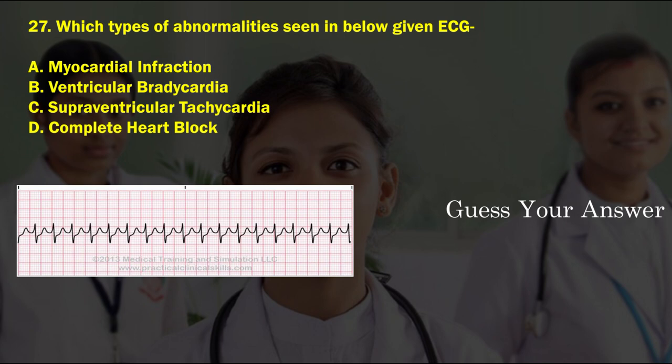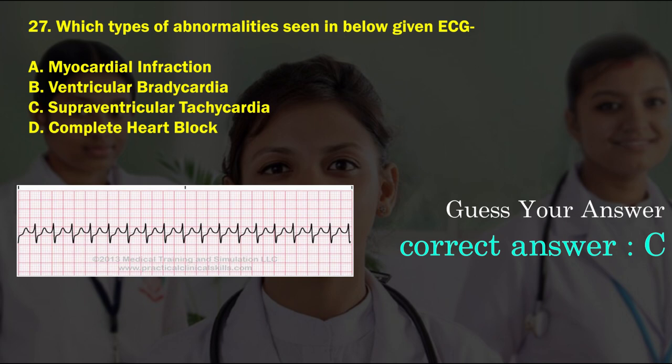Which type of abnormality is seen in the below given ECG? Option A: myocardial infarction, option B: ventricular bradycardia, option C: supraventricular tachycardia, option D: complete heart block. The correct answer is option C, supraventricular tachycardia.